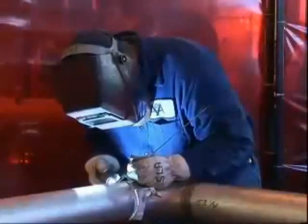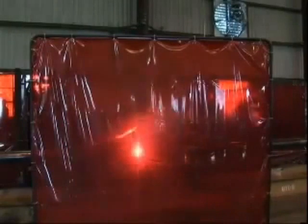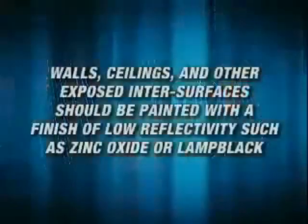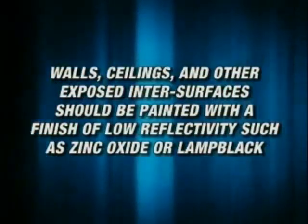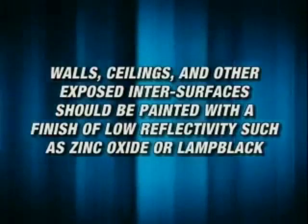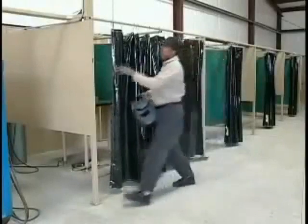Ultraviolet radiation is produced in arc welding when using shielding gas. Arc welding operations should be isolated so that other workers are not exposed to direct or reflected rays. Walls, ceilings, and other exposed inner surfaces should be painted with a finish of low reflectivity, such as zinc oxide or lamp black. Arc welding stations for regular production work can be enclosed in booths, with portable non-combustible or flame-resistant screens or curtains inside. Booths and screens shall permit circulation of air at floor level.